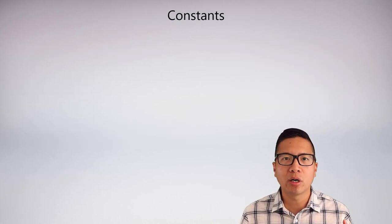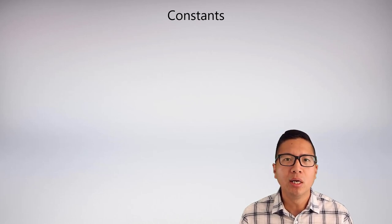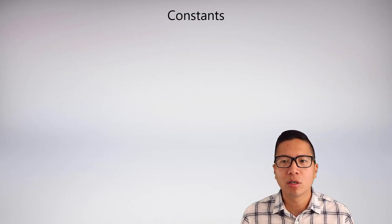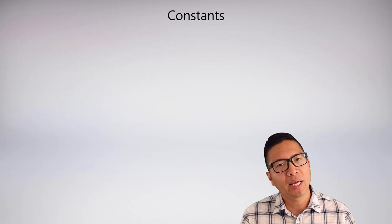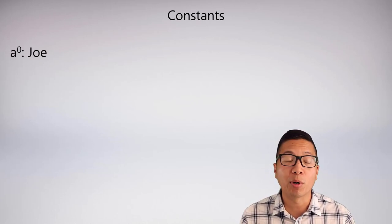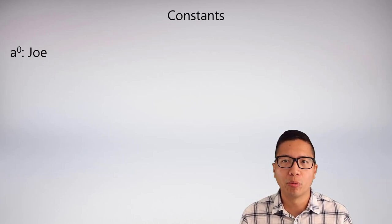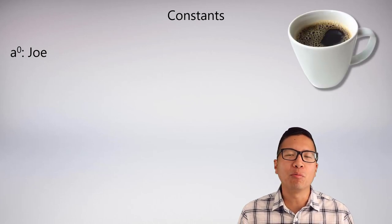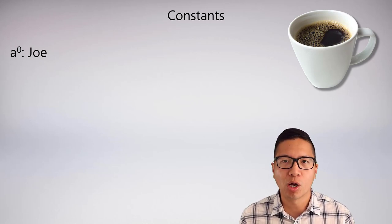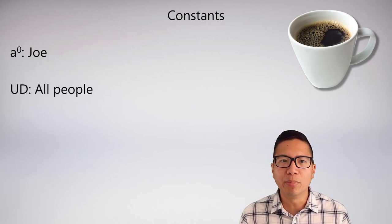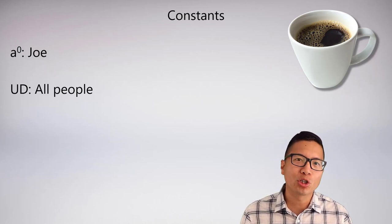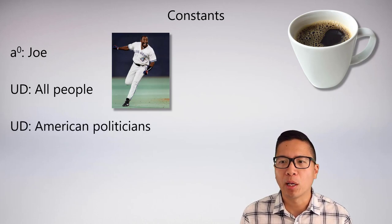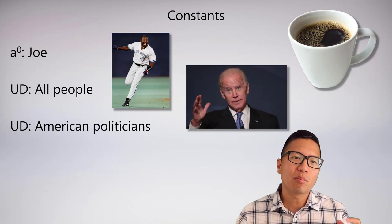We're only missing a couple things to complete our understanding of interpretations. First, how to give an interpretation of a constant. A constant is like a name letter — it picks out an individual from our universe of discourse. For example, constant a₀ picks out Joe. But I need to know which Joe — if the UD is all people, there are many Joes. If the UD is American politicians, I can narrow it down.